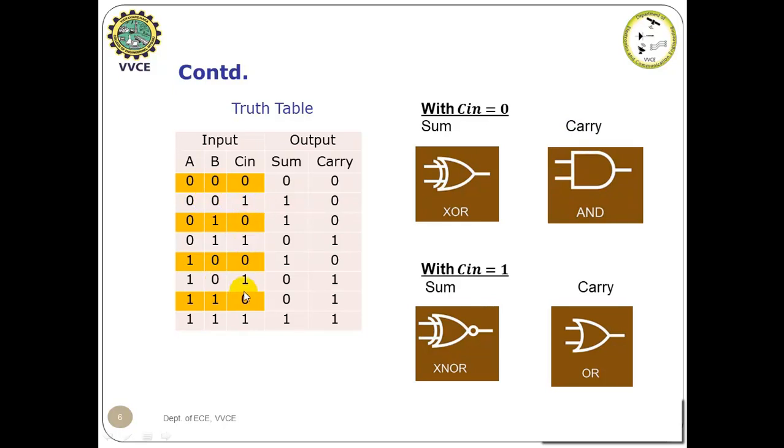The remaining four combinations are with Cin is equal to one and A, B again acting as two bit inputs, 00, 01, 10, 11. With this four combination of inputs given to the full adder, at the sum output we can realize XNOR operation and at the carry output we can realize OR gate operation.